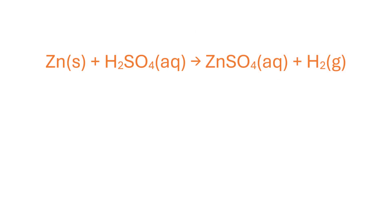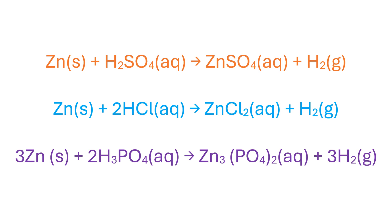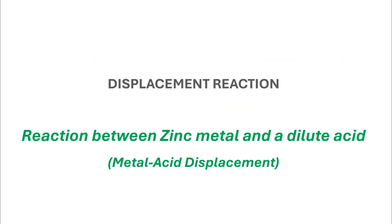Zinc also reacts with dilute hydrochloric acid to form zinc chloride and hydrogen gas, or with phosphoric acid to form zinc phosphate and so on. In this experiment we'll consider the reaction of zinc with dilute sulfuric acid. This reaction is an example of a single displacement reaction.